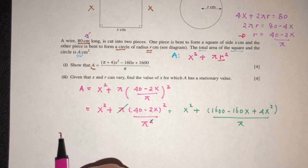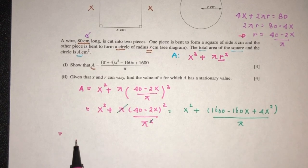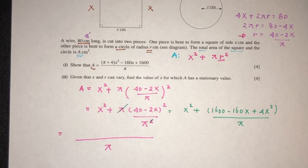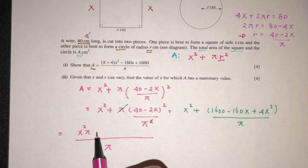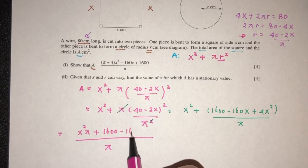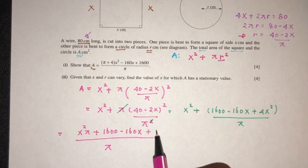Now we can simplify. Now we can simplify, obviously, make them have the same base, that will become π over here. And here we can have x square, π, plus 1600 minus 160x plus 4x square.